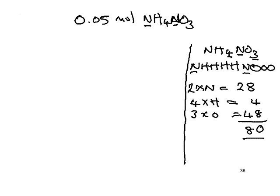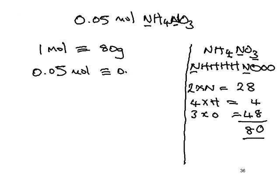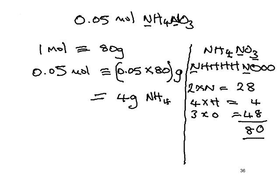One mole is equivalent to 80 grams. We've got 0.05 moles, so that's going to be equal to 0.05 times 80, which is 4 grams of NH₄NO₃. That's our answer.